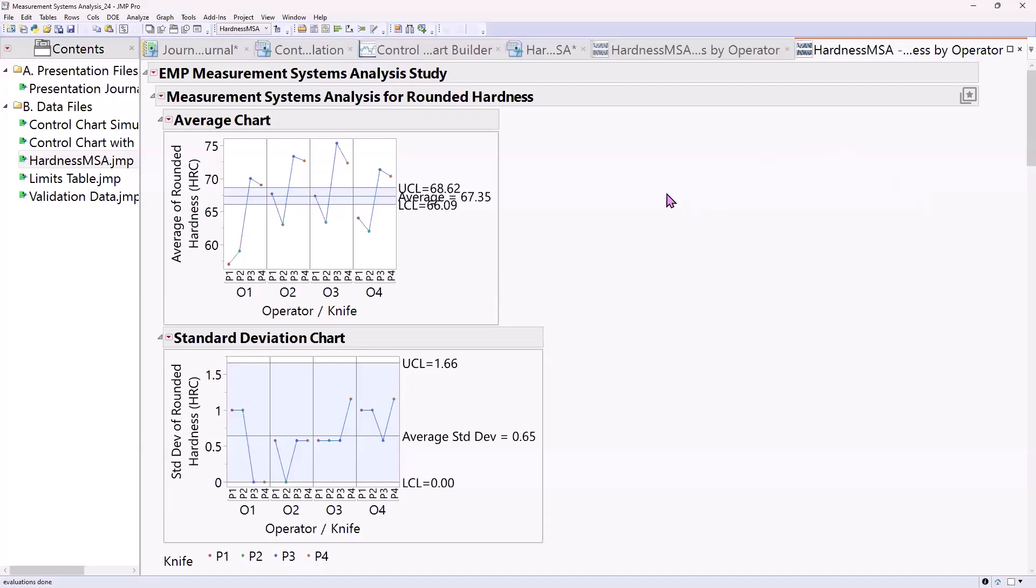All right, graphics. Let's talk graphics a little bit. I love graphics, especially when we're assessing gauges. This average chart helps me understand whether my gauge can detect change in my measurements. In this case, it's like a control chart, but I want all my points to be outside of the control limits. And that way I understand that my gauge can measure part-to-part variation. This is very similar to a variability or a multivariate chart.